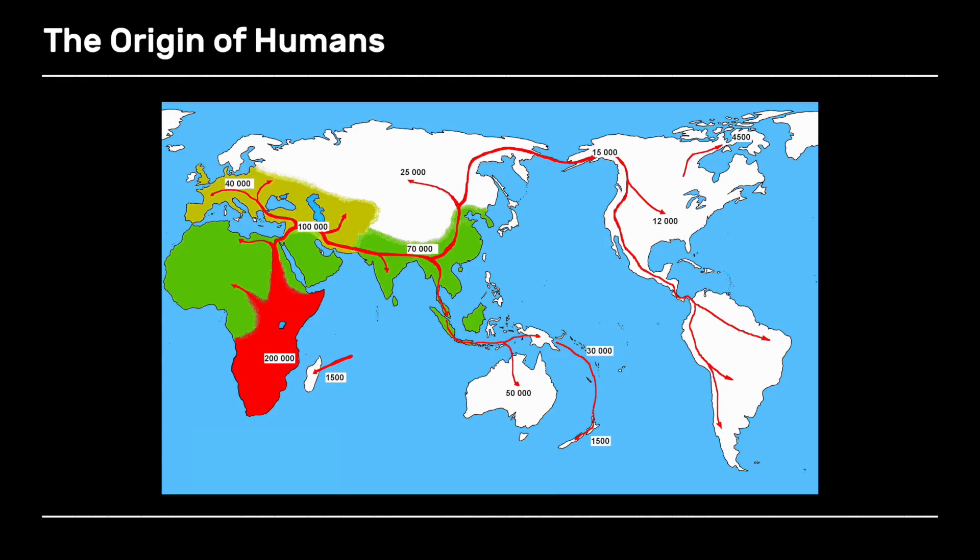We can see that to get out of Africa — this map shows you — simply by walking and occasionally getting in boats, say to get to Australia, by moving about one kilometer a year, you can spread around the planet. That's all you need to do. You're not trying to get to anywhere. You don't know where anywhere is. You're just a group of hunter-gatherers slowly moving around the planet.